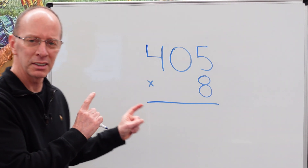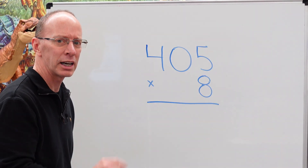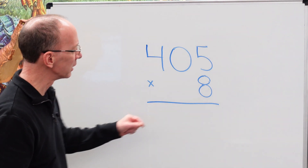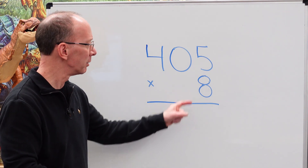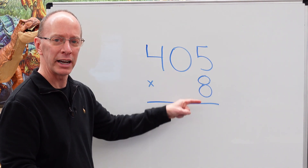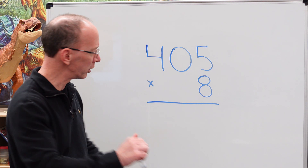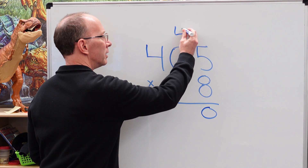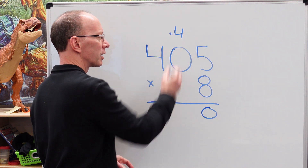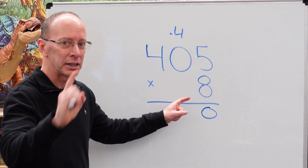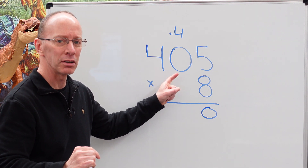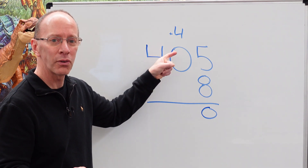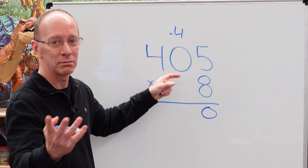Welcome back. This is a little tricky one. Take your time; if you need to pause the video, go ahead. Let's take it step by step. 8 times 5 is 40 — so I'm going to put the 0 right here and the 4 up here. I'll put a plus sign so you know what's going on. 8 times 0 is 0, and then we have 0 plus the 4, which is 4.